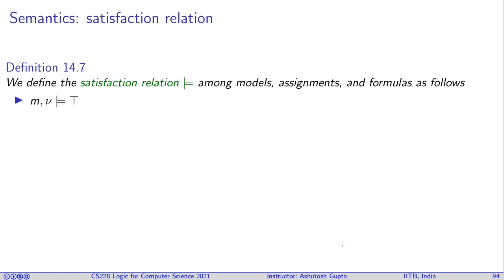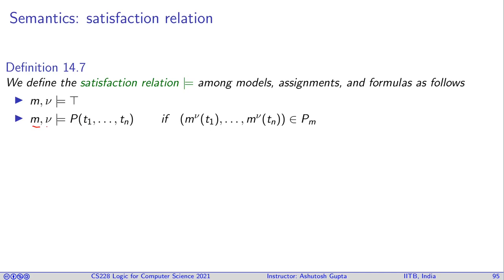Now we define the satisfaction relation, just as we did in propositional logic. We define satisfaction among models, assignments, and formulas. For an atomic formula P(t1, ..., tn), we interpret the terms under the model and assignment, then check if that tuple is in the interpretation of predicate P. For t1 = t2, we interpret both terms and check if they yield the same value.